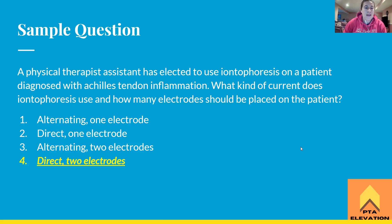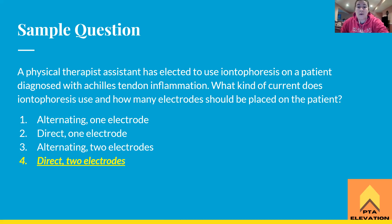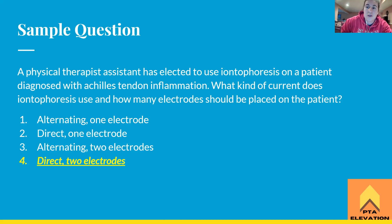The answer is direct current, two electrodes. Iontophoresis uses direct current — also called galvanic current, which the boards sometimes uses to trip you up. It's not alternating between positive and negative; it flows straight through in one direction. And we always need two electrodes on the patient: one active (where the medication is placed) and one dispersive to ground the patient — so we're never putting just one electrode on someone.